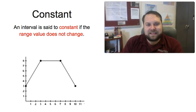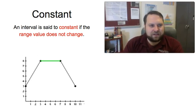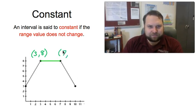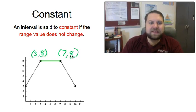If an interval is constant, the range value does not change. Now we can look at this middle section here labeled in green, and we can look at our x and y values. We have (3,8) for our starting value and (7,8) for our ending value, and we can see the range, which is again all I care about, on this interval does not change. When this happens, we say that the interval is constant.